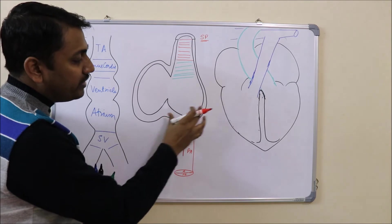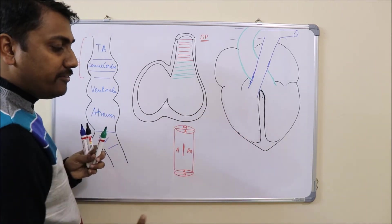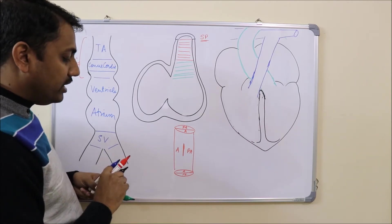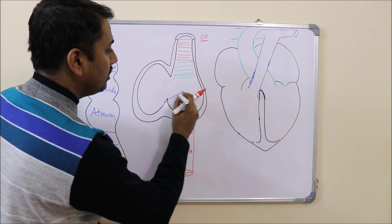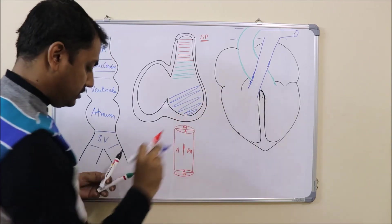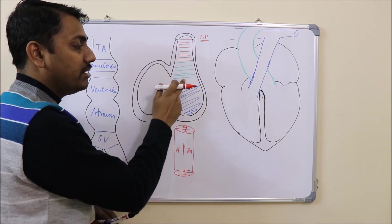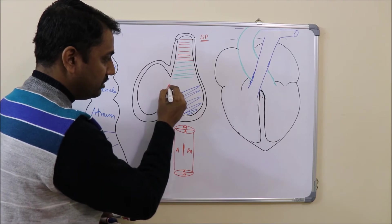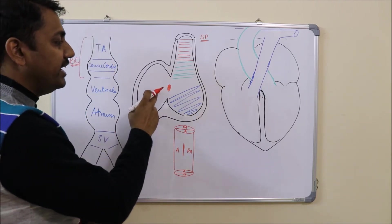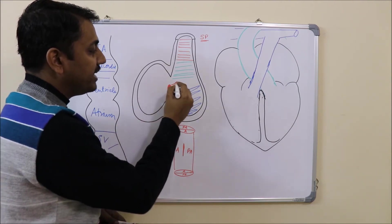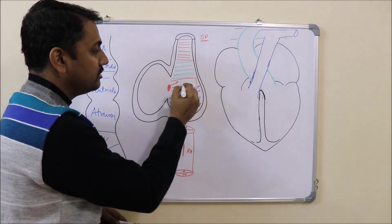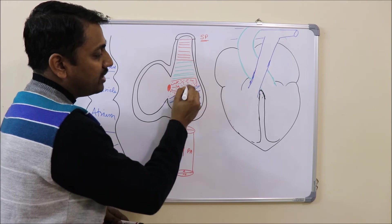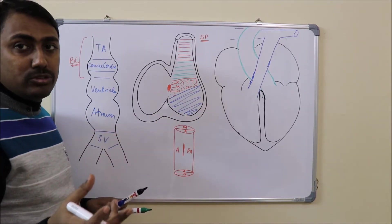The two ventricles — right and left — will enlarge, and from the floor arises a septum known as the muscular part of the interventricular septum. However, a gap remains because this muscular part will not fuse with the bulbar septum. This gap is filled by another structure known as the endocardial cushion, which lies at the junction of the atria and the ventricle. The endocardial cushion will proliferate anteriorly to fill this gap.